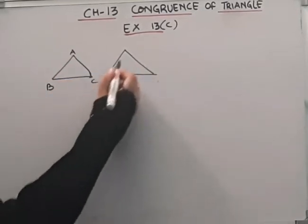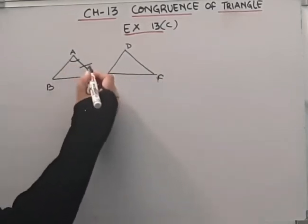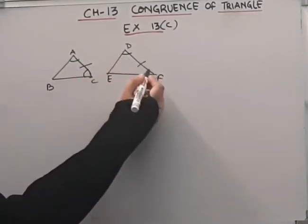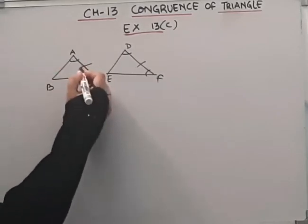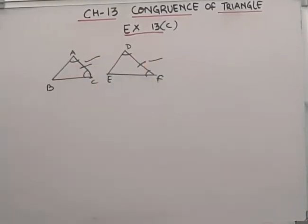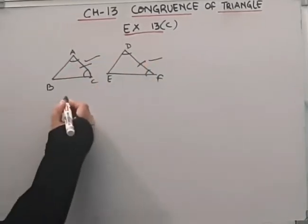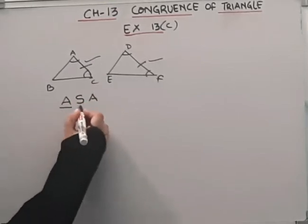So here we will use which property? Angle, side, angle. If we have two angles equal and the side between them equal, then these two triangles are congruent. So we are dealing with angle, side, angle: A, S, A.